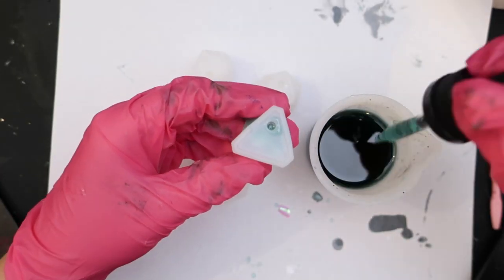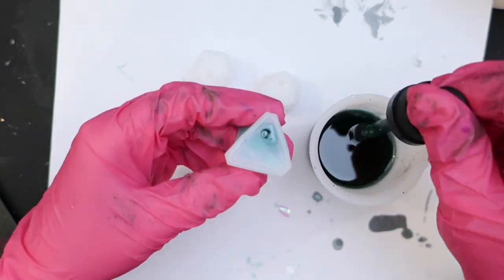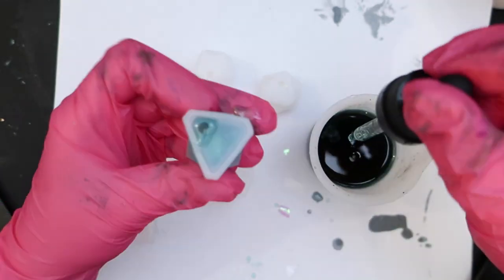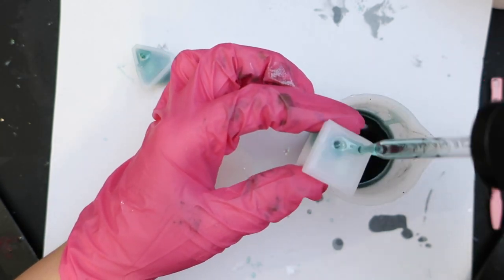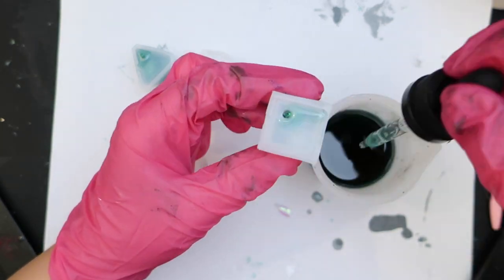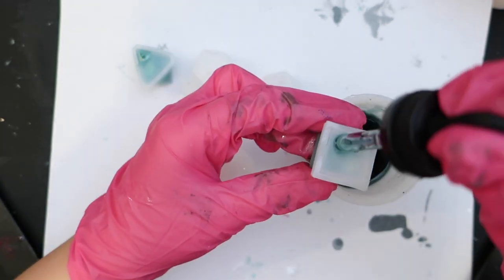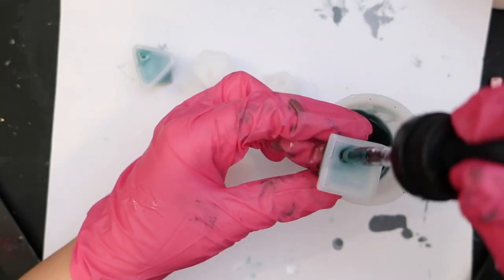I just grabbed a dropper that I had laying around which is a pretty darn good alternative to a syringe. And I just started filling them up. And this was way easier than just trying to pour the resin inside the mold.